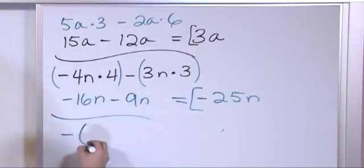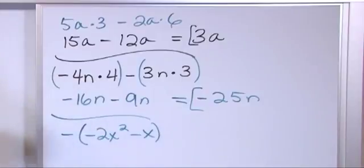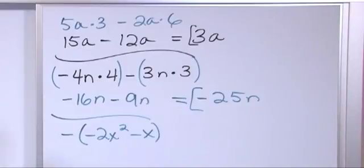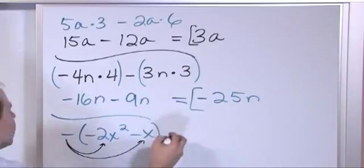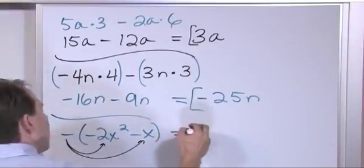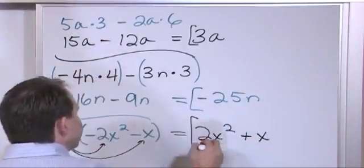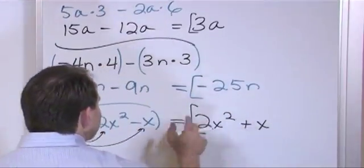What if you have negative of (negative 2x squared minus x)? Inside the parenthesis you have x squared and x, which are not like terms so you can't add them. But you can distribute the negative one in: negative times negative gives positive 2x squared, and negative times negative gives positive x. That's all you can do — you keep it as 2x squared plus x because these are not like terms.